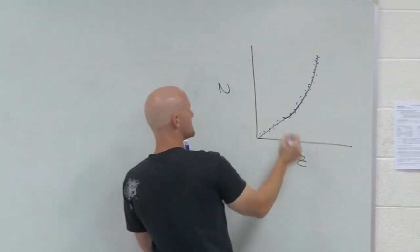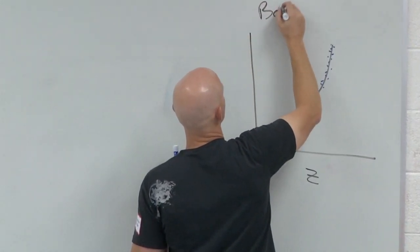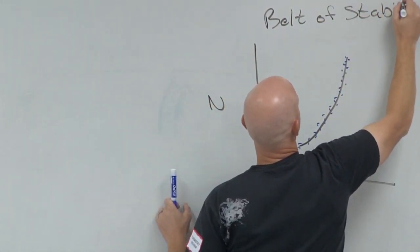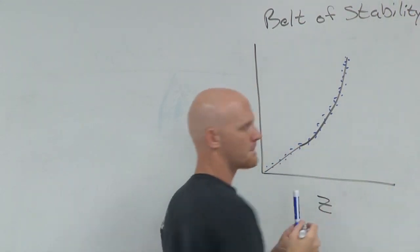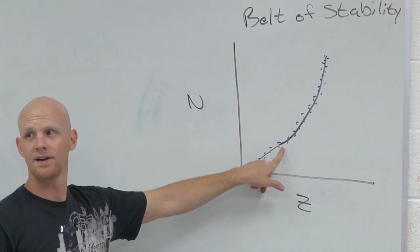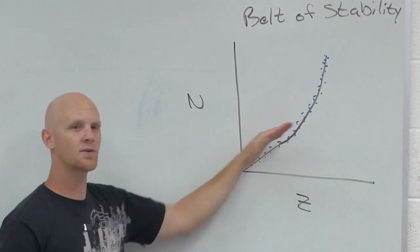And we call that narrow region where they all lie on this N to Z, the belt of stability. And up to atomic number 20 or so, the slope here is perfect 1.